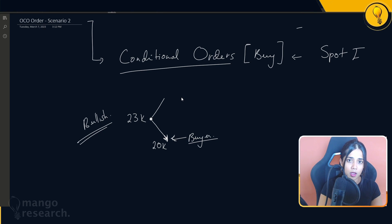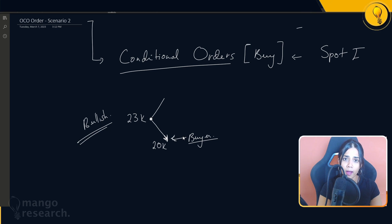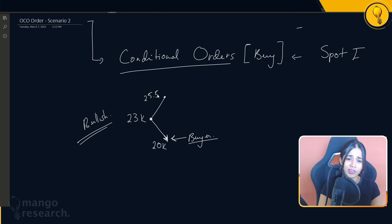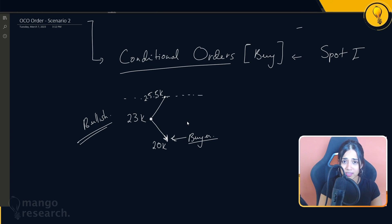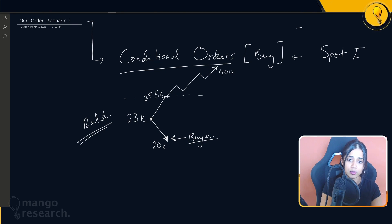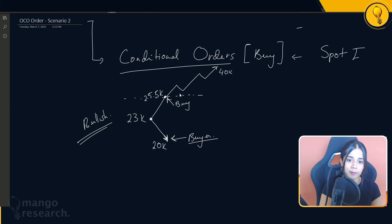Instead, Bitcoin could get up to 25k and move forward from there. So I tell myself: if Bitcoin comes down to 20k I want to be a buyer, however if it gets up to 25.5k I think we're breaking a major region of resistance, and 23k and 20k coming back down becomes grim. At 25.5k I think Bitcoin sees continuation all the way up to $40,000, so I want to be a buyer there too.